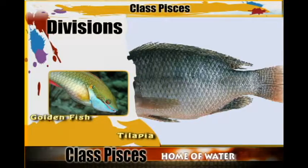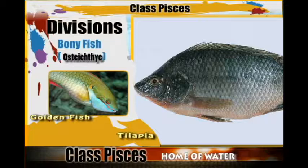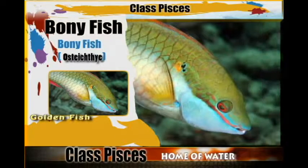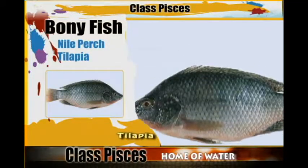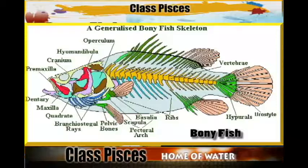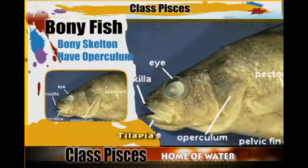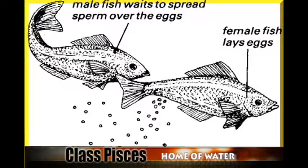Now when we go to the other division, which is the Osteichthyes — referred to as the bony fish — these include the Nile perch, the tilapia, and many others. They have a bony skeleton and they have an operculum, meaning that they can protect the gill slits. The fertilization in the Osteichthyes takes place outside the body — they undergo external fertilization.